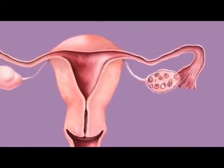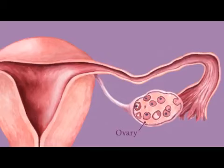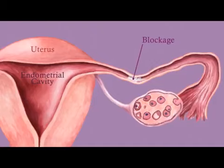During fertilization, the egg travels from the ovary through the fallopian tube and into the endometrial cavity of the uterus. Conception cannot occur if a blockage prevents the egg from traveling its normal path through the fallopian tube and into the endometrial cavity.